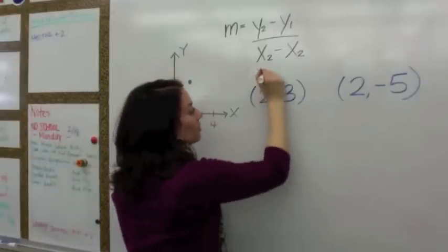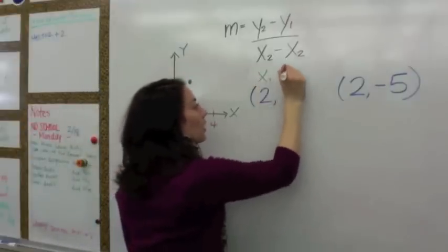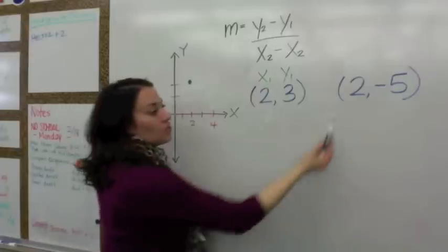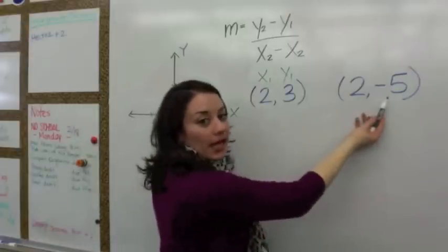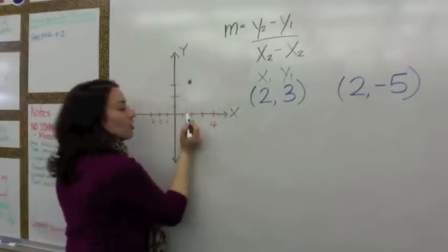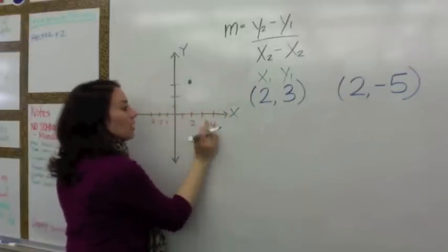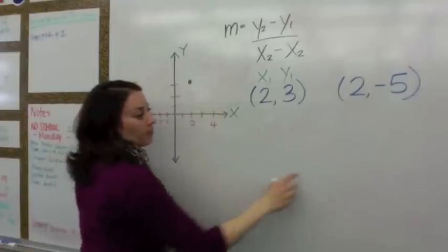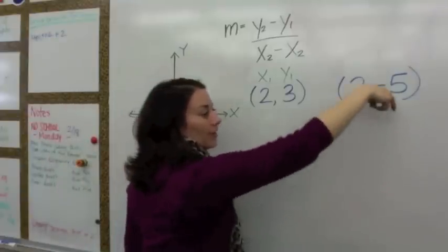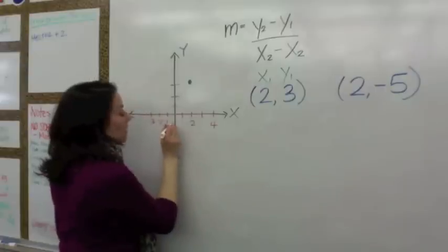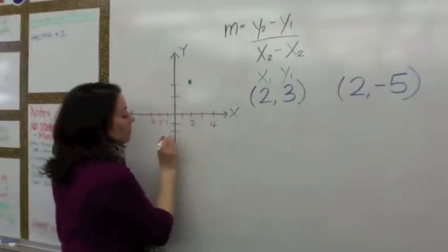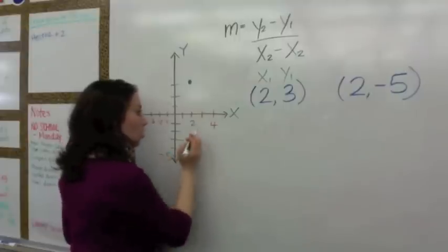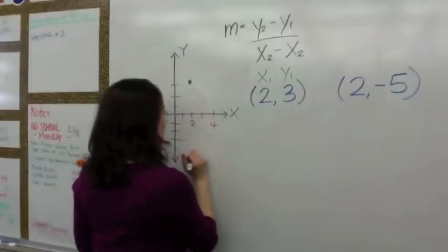That was the first coordinate point — x1, y1. What about the second coordinate point? It's 2, negative 5. So we're going to start at 2. Are we going to go up or down? We're going to go down 5: negative 1, negative 2, negative 3, negative 4, negative 5. So we're here at 2, down 5.